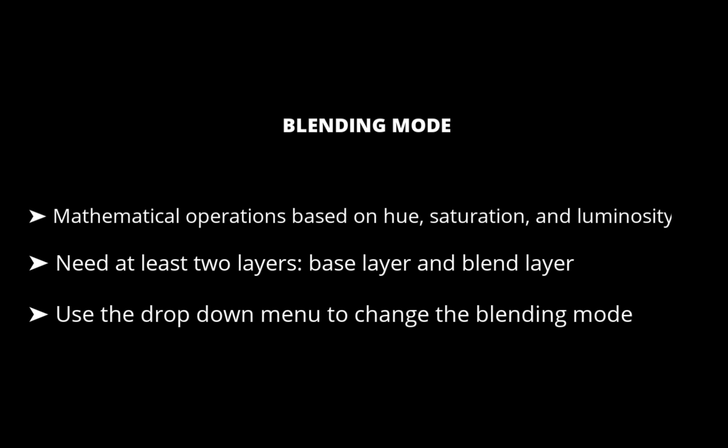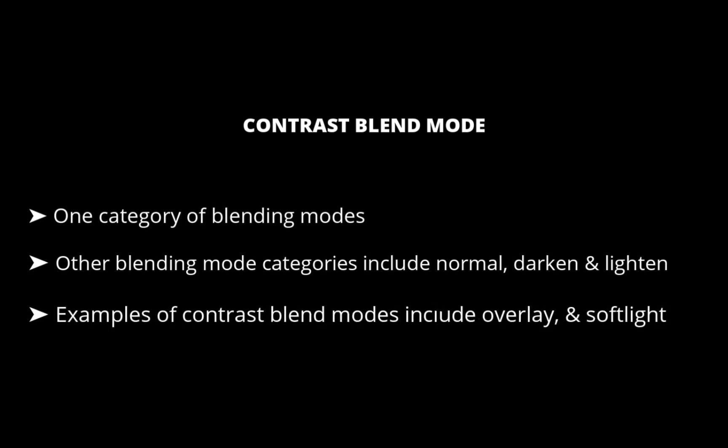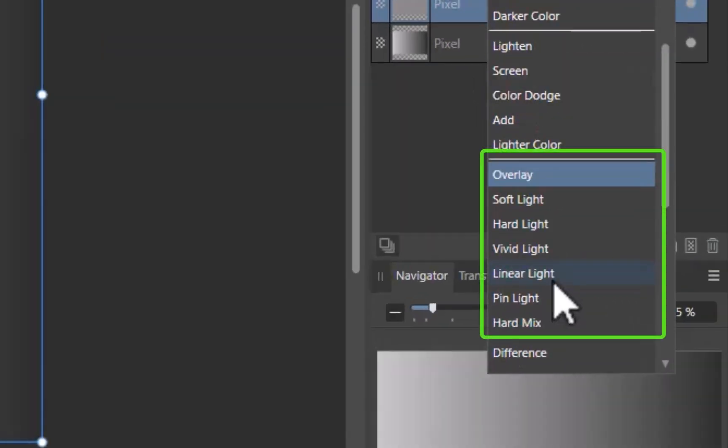Now let's give an overview of the contrast blend mode specifically. The contrast blend mode is one category of blend mode. Other categories include normal, darkened, and lightened. The most commonly used contrast blend modes are overlay, soft light, hard light, and linear light. As you can see, Affinity has grouped them together in the drop-down list.